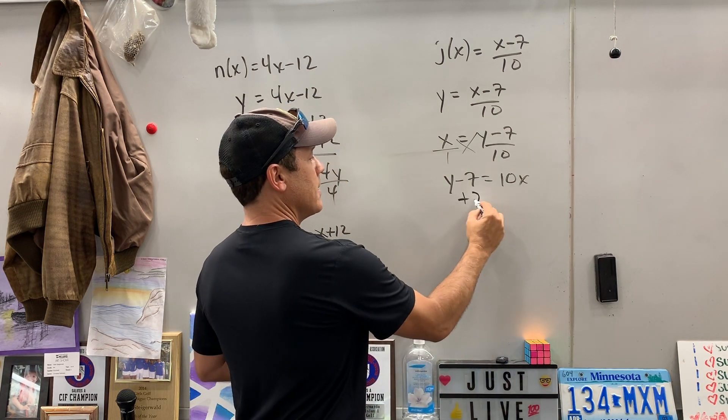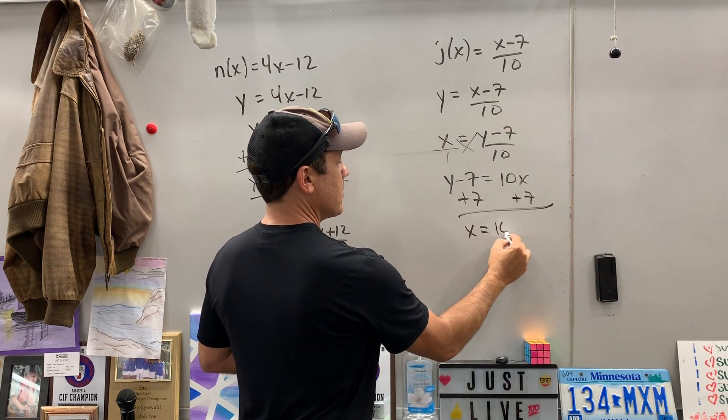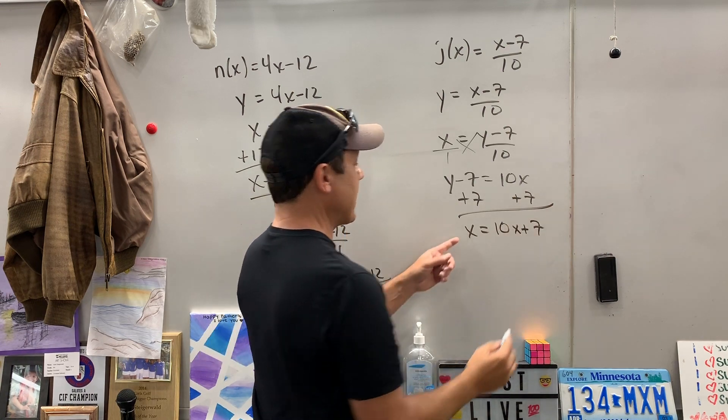To finish it off, let's add 7 to both sides. y is equal to 10x plus 7. But again, it's not x.